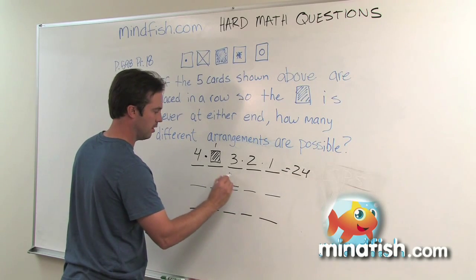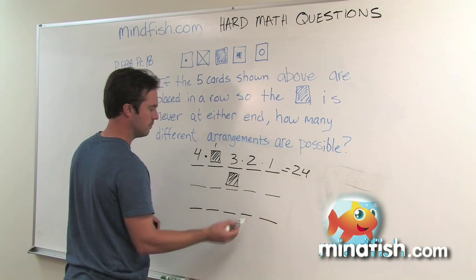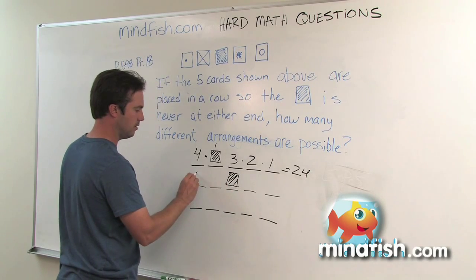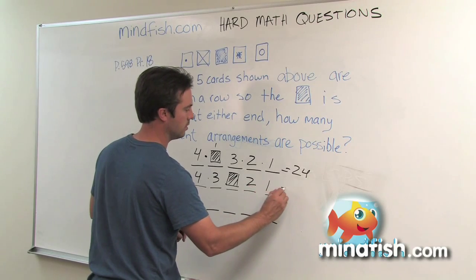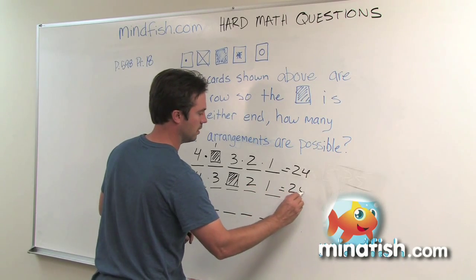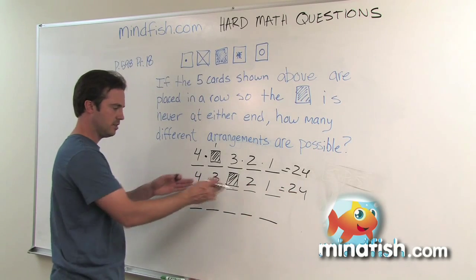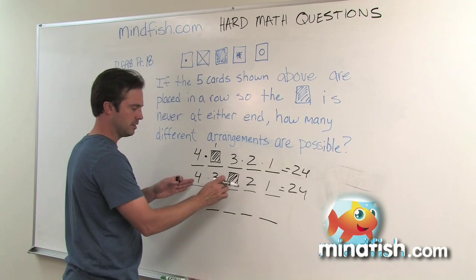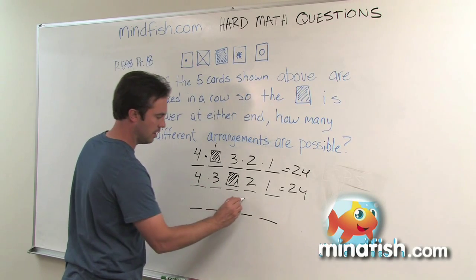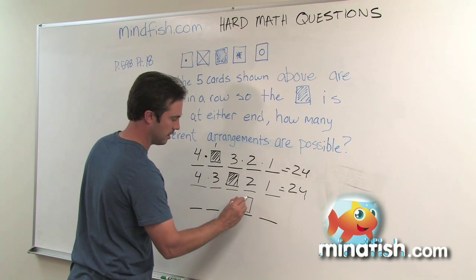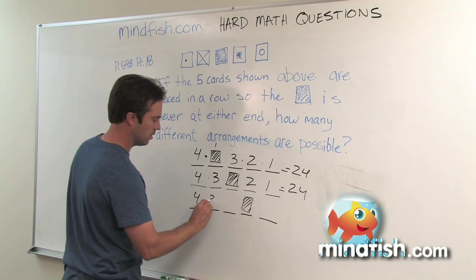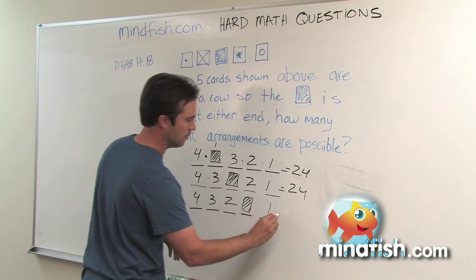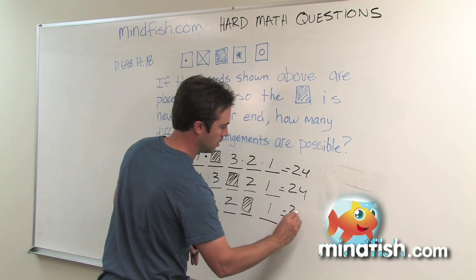This box could also go in the middle position — again four choices for the first spot, then three, two, one — again twenty-four different ways to arrange the boxes given this box is in the middle. And then lastly, this box can go in the fourth position, and again it's four, three, two, one — twenty-four.